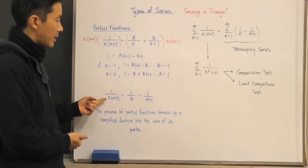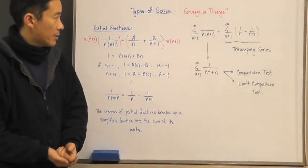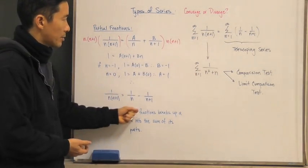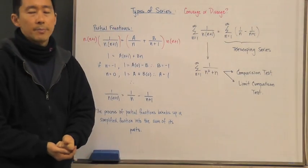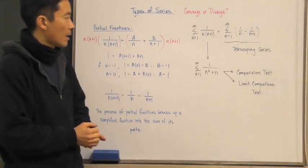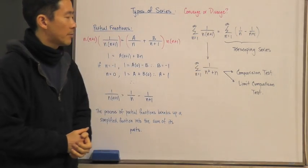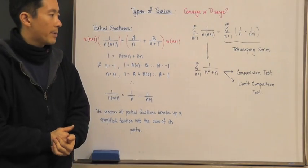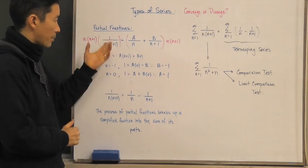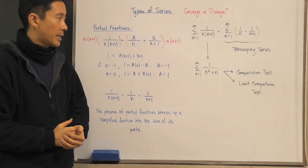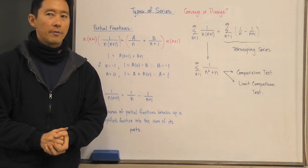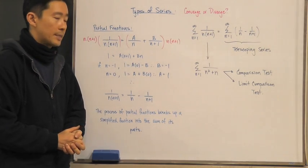The partial fractions process breaks a simplified fraction into the sum of its partial parts. Notice that the result — one over n minus one over n plus one — is exactly our telescoping series. So if we encounter something like one over n times n plus one, we can apply partial fractions to generate the telescoping form and then determine convergence or divergence. We can also simplify to one over n squared plus n and use the comparison or limit comparison test.